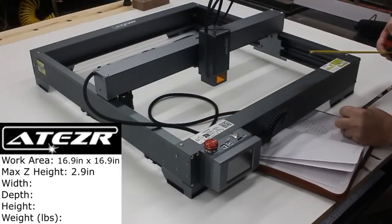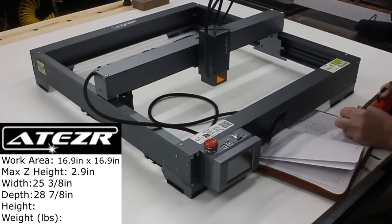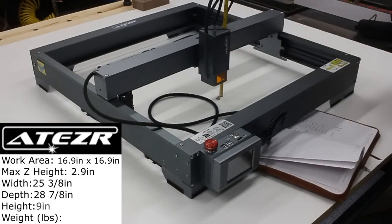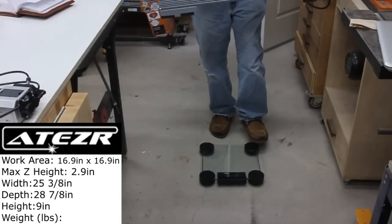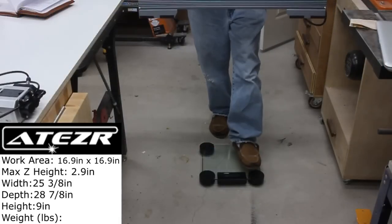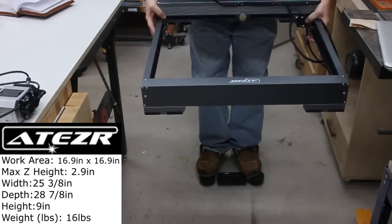Next up, the width turned out to be 25 3⁄8. The depth was 28 7⁄8. And the overall height of the machine came in about 9 inches tall. I then held the machine and I stepped onto the fat meter, and once I subtracted my own lard, it clocked in at 16 pounds.